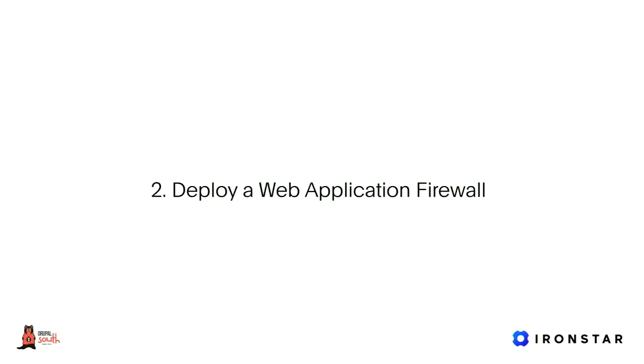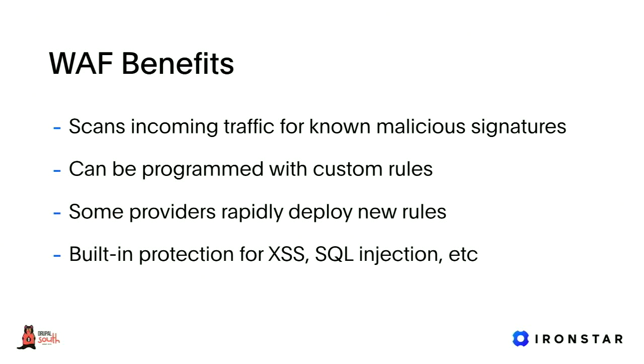The next thing you can look at is a web application firewall. A WAF takes the CDN to the next level and scans the requests going through it for known malicious traffic signatures, then filters them out. Within a few hours of the Drupalgeddon 2 exploit becoming generally available, Cloudflare, Fastly, and other CDN providers had either made available or automatically installed WAF rules that would detect that exploit and filter it out. Using that WAF meant that even if you didn't get to patch your site in time, you would still have enjoyed the protection it afforded.